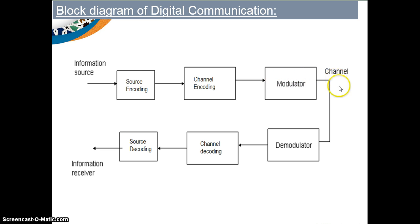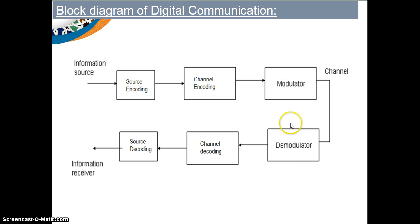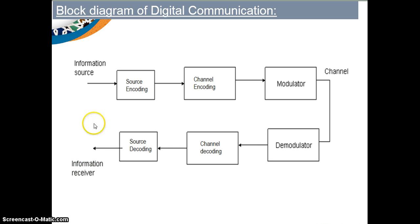After modulation, the signal is passed through the channel, where noise gets added, and then it comes to the receiver. In the receiver, all the processes done in the transmitter need to be carried out in reverse. Modulation was done, so demodulation is performed. Channel encoding was done, so channel decoding is performed. Source encoding was done, so source decoding is performed. Finally, the human-readable information comes out at the receiver. This completes the general block diagram of a digital communication system.